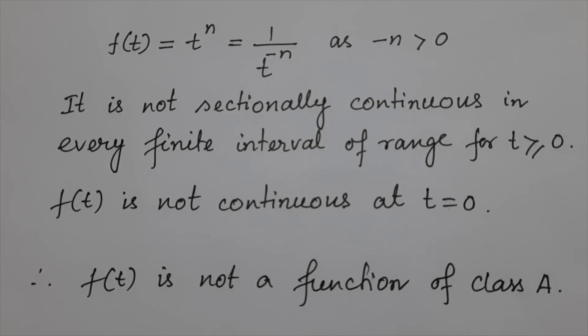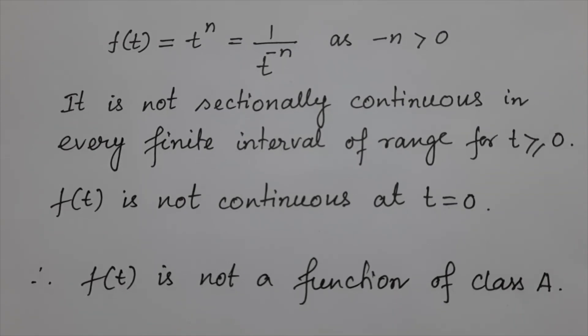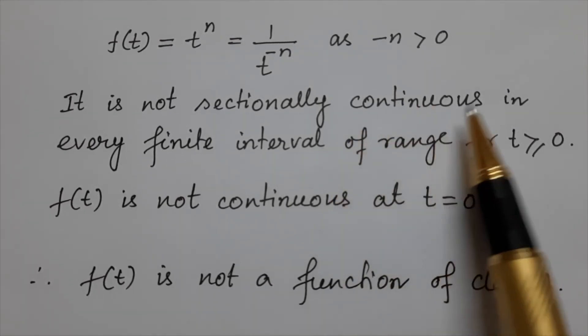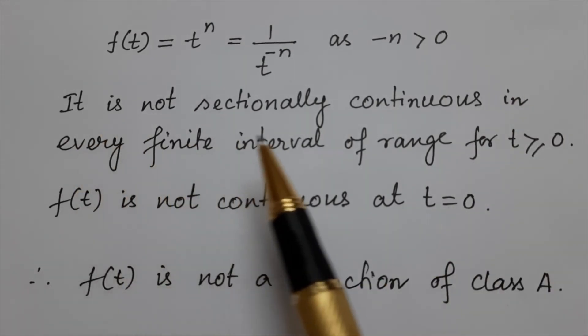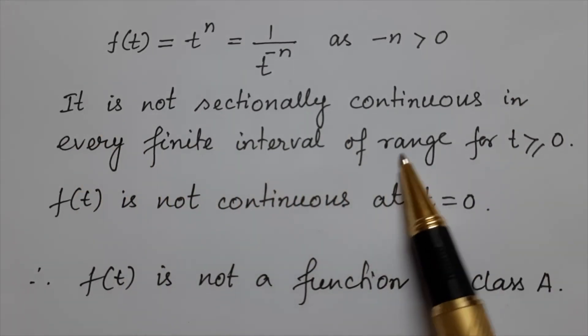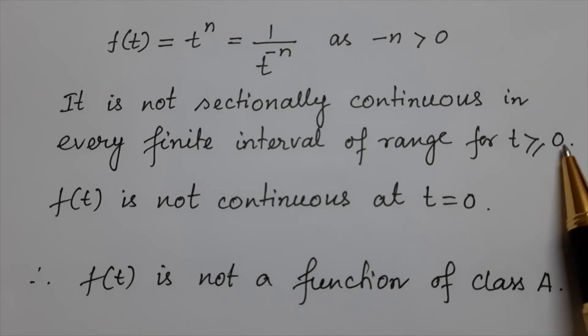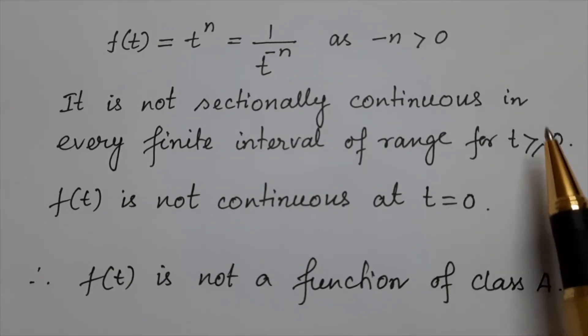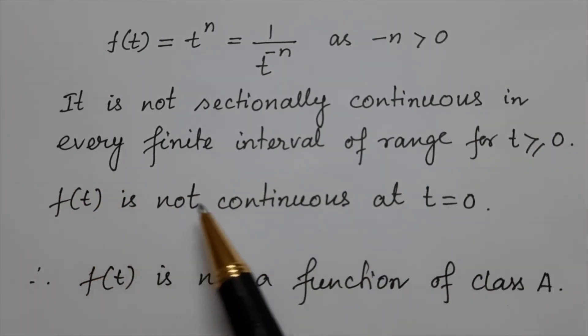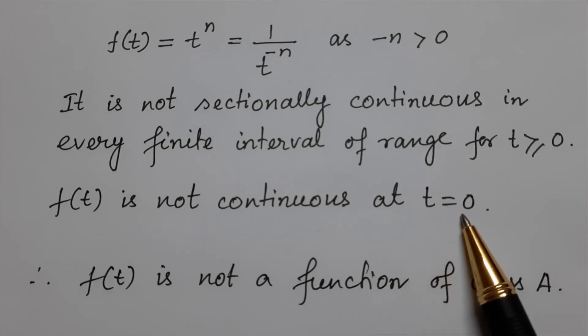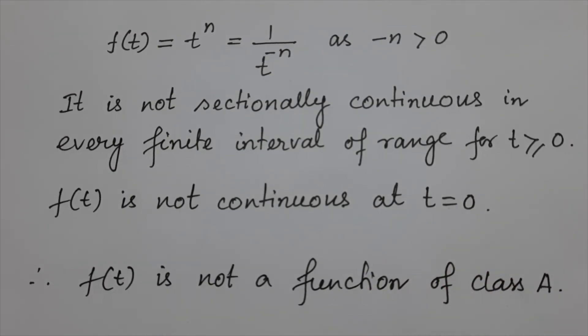Now here you see that the function f(t) equal t power n is not sectionally continuous in every finite interval of range for t greater equals to 0. And f(t) is not continuous at t equals to 0. Therefore f(t) is not a function of class A.